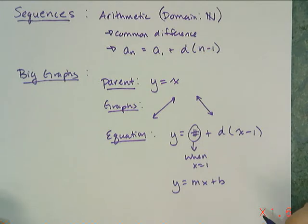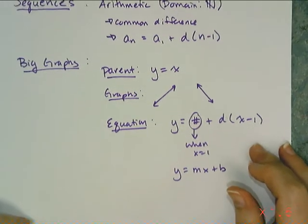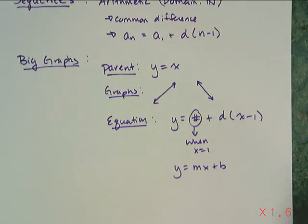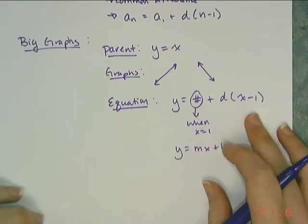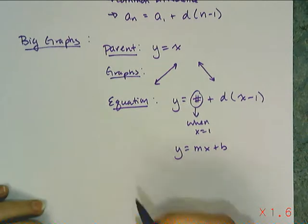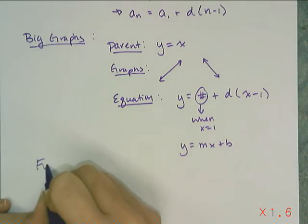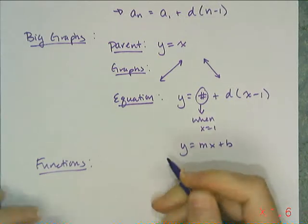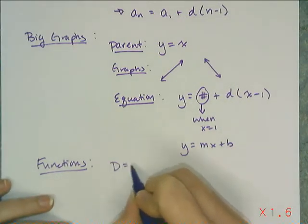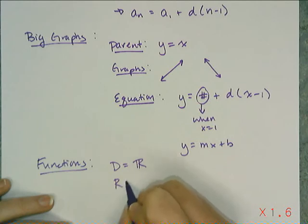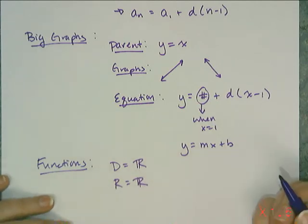After big graphs we talked about functions. These of course will pass the vertical line test. We talked about finding their domains and ranges. In terms of domain and range, since I'm compiling all the information, if I have just some linear function, the domain of the linear function in general is all reals, and the range is also all reals.